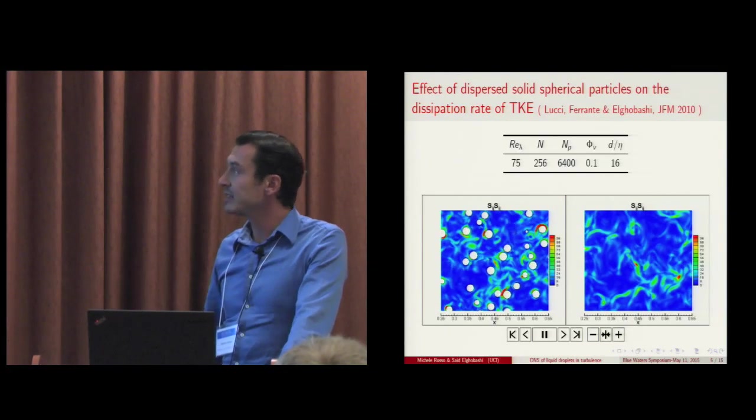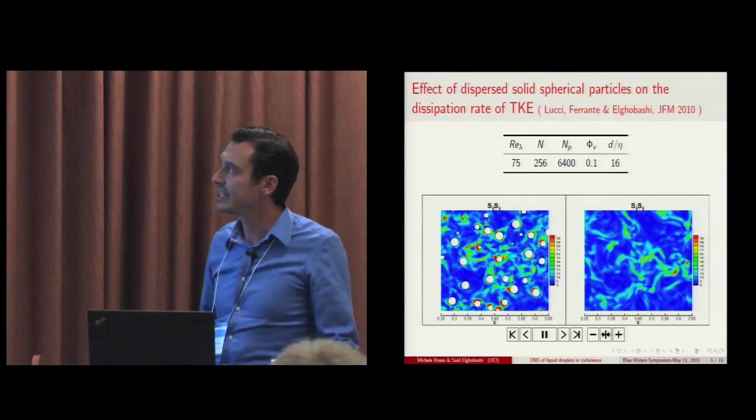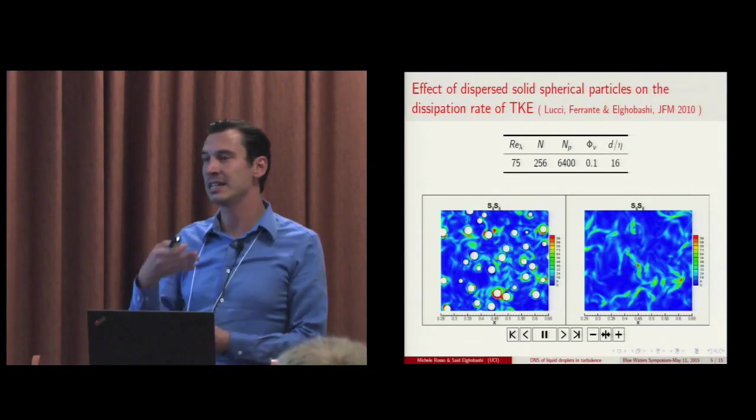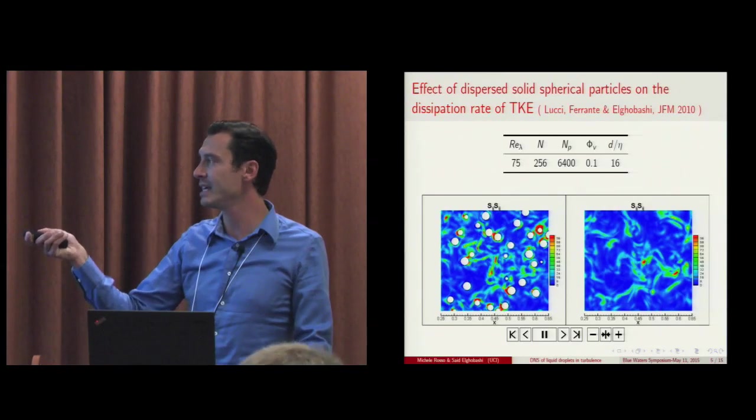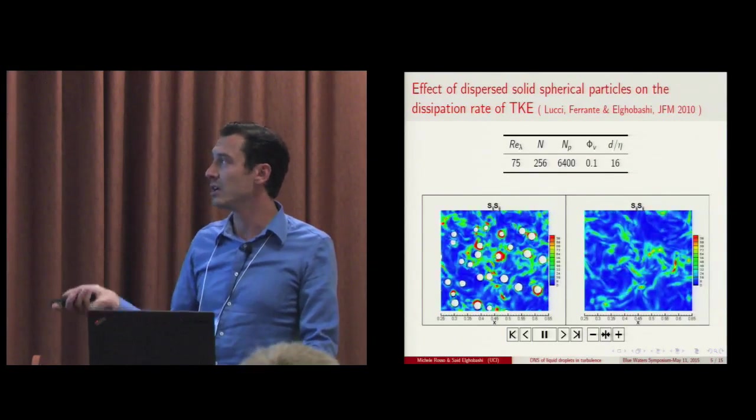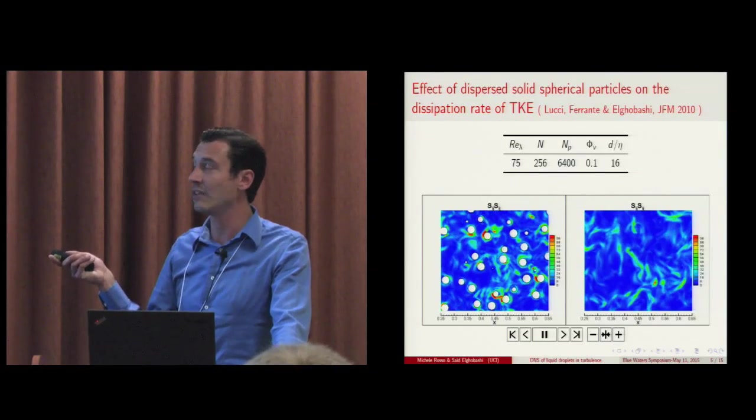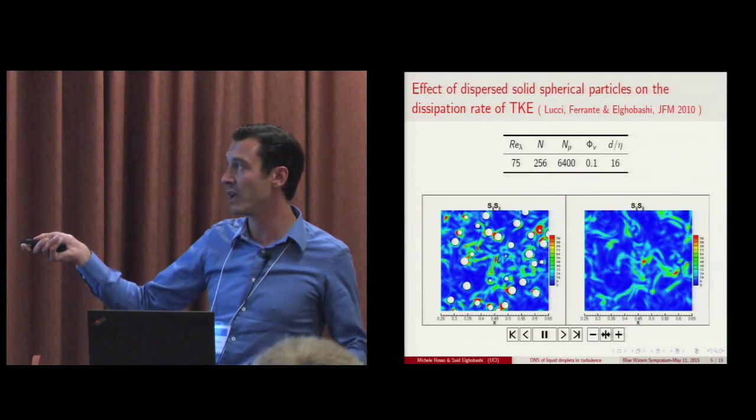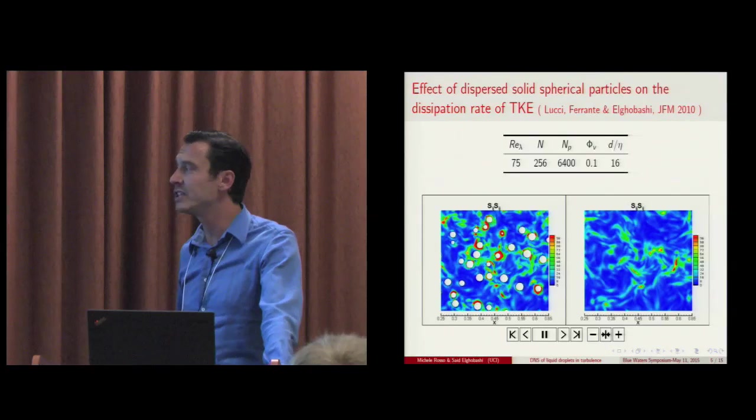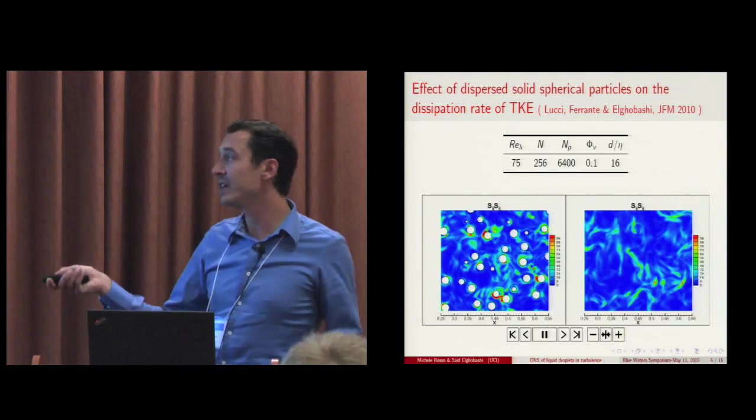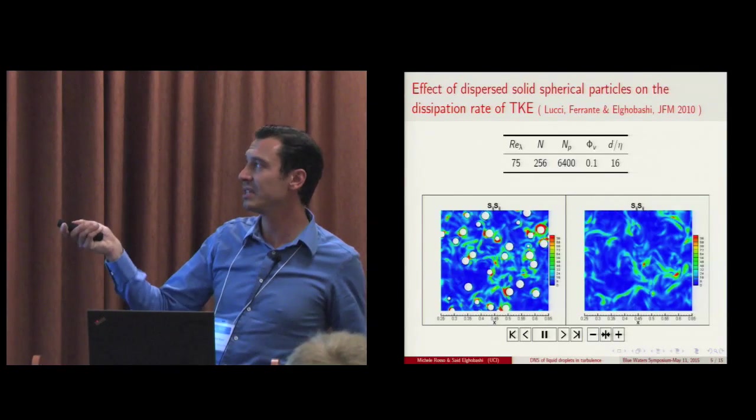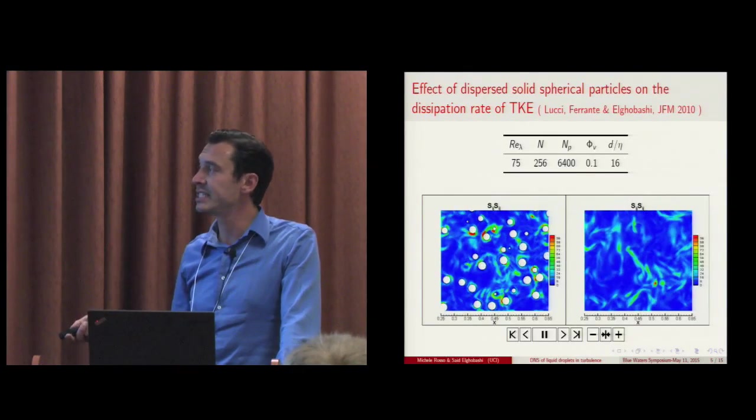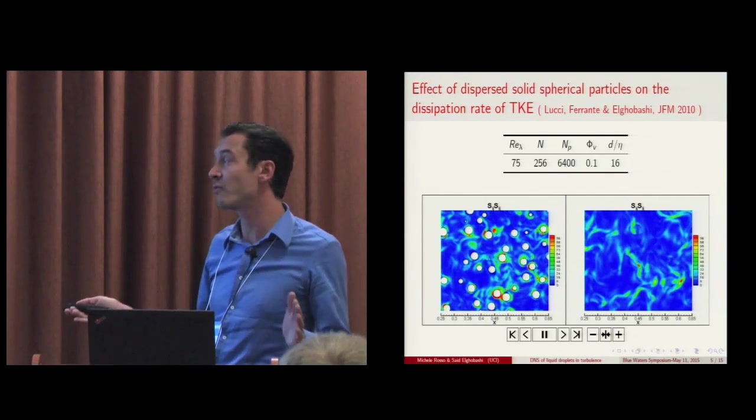So in 2010 El Gobashi, Lucci and Ferrante performed a simulation of DNS with dispersed solid spherical particles. In the video you can see a slice of the computational domain. On your left the case of a pure single phase flow for a cubic grid of 256 grid knots per direction and a Reynolds lambda of 75. What you see here is a slice and it portrays the evolution in time of the dissipation rate of turbulent kinetic energy. Now on the other side you have the same initial turbulent field but with the presence of dispersed solid spherical particles. In that simulation we have 64,000 and they were covering a volume fraction of 0.1.